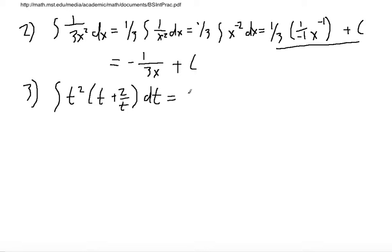We can multiply, distribute this t² in. We get t³ plus 2t dt. They're the same thing, so why not integrate it when it's in this form?